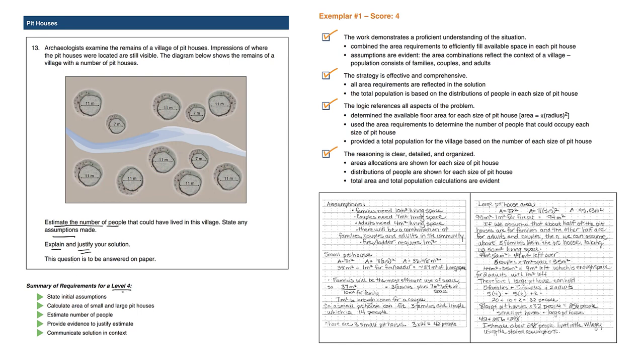So our goal is to get a four out of four. We need to actually state assumptions. We need to calculate an area of small and large pithouses, so we need to make a distinction. We need to estimate the number of people, provide evidence and justify our estimate, and communicate it in the context of this problem.